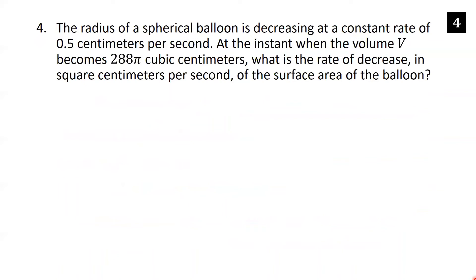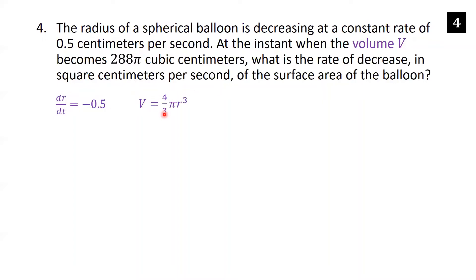The radius of a spherical balloon is decreasing at a constant rate of 0.5 centimeters per second. At the instant when the volume V becomes 288 pi cubic centimeters, what is the rate of decrease in square centimeters per second of the surface area? This is a related rates problem. We're given dr/dt equals negative 0.5 centimeters per second. The volume of a sphere is 4/3 pi r cubed, and the surface area is 4 pi r squared.